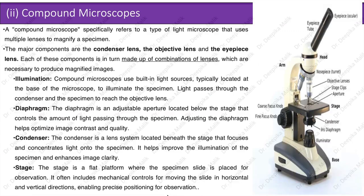A compound microscope uses multiple lenses to magnify a specimen. Its major components are the condenser lens, the objective lens, and the eyepiece lens, each made up of a combination of lenses necessary to produce magnified images. Compound microscopes use a built-in light source, typically located at the base, to illuminate the specimen. Light passes through the condenser and the specimen to reach the objective lens.